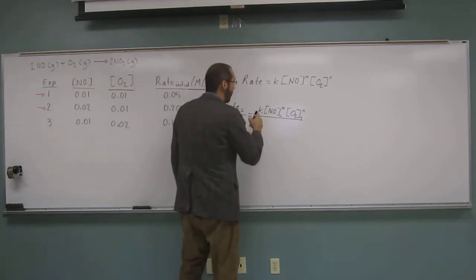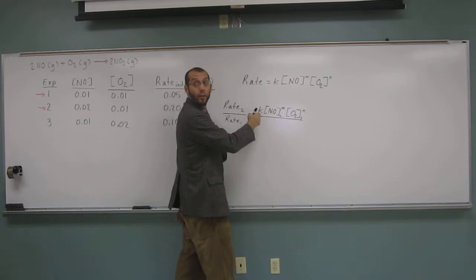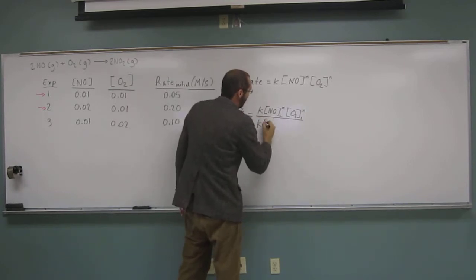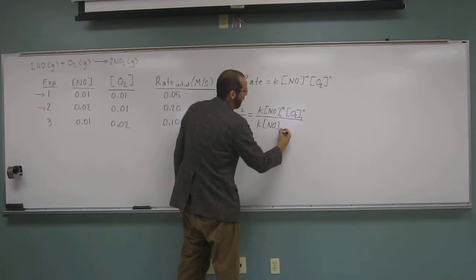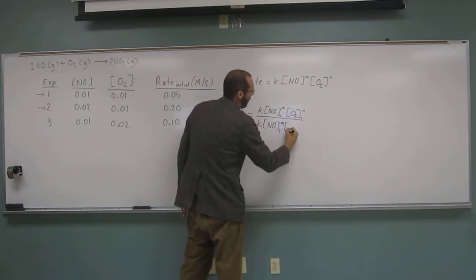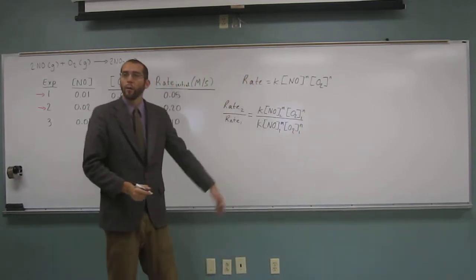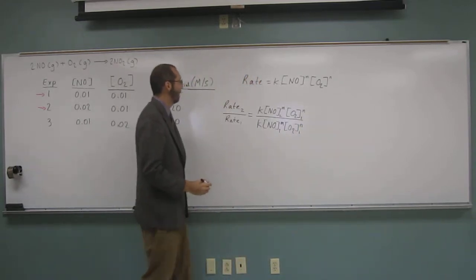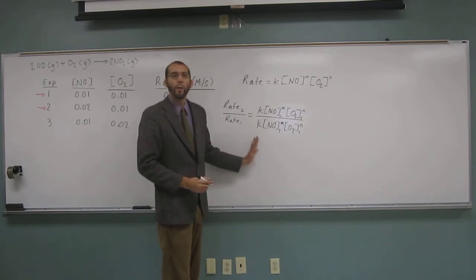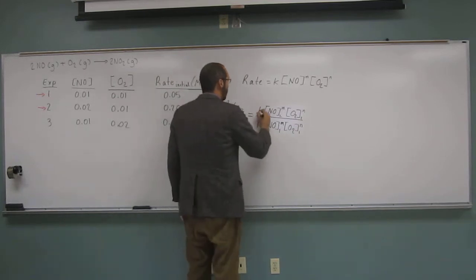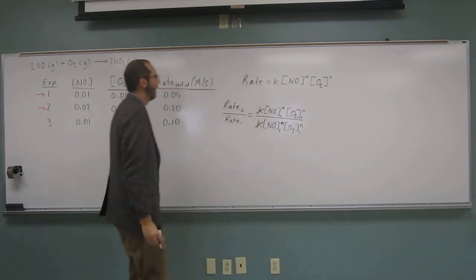Notice I didn't put a 2 underneath K — because it's not going to change. So this would be: K times [NO₂]^M times [O₂₂]^N, all divided by K times [NO₁]^M times [O₂₁]^N. K cancels straight away. The concentration of NO cannot cancel because there's a change in it. But look at the concentration of O₂ — it's the same in both experiments. The reaction order doesn't change either, so those O₂ terms cancel.